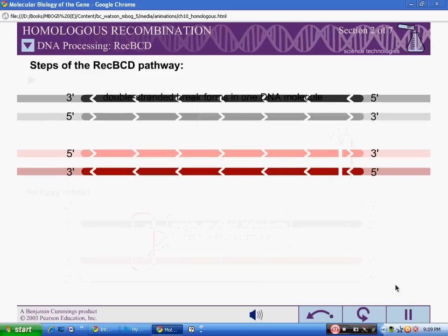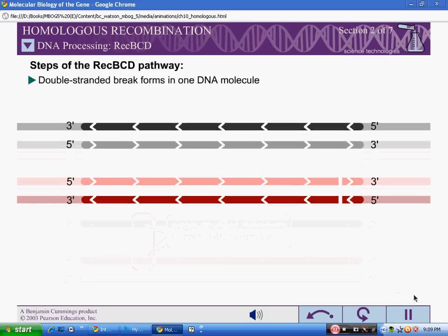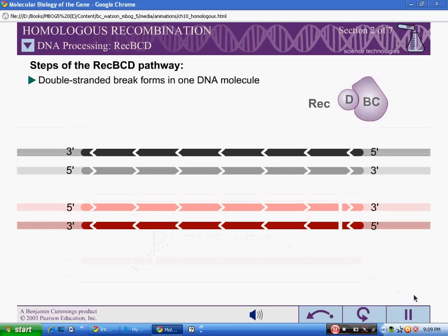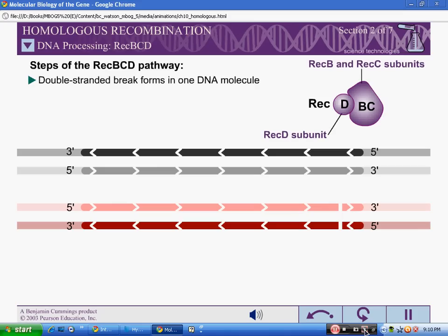In the double strand break repair model of homologous recombination, the DNA is then processed to generate a gap in the DNA with a 3' single-stranded overhang or tail. In E. coli, the REC-BCD enzyme processes blunt breaks in DNA molecules to generate such tails.